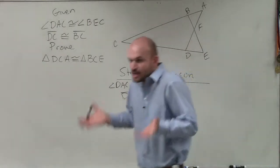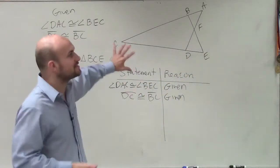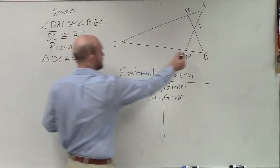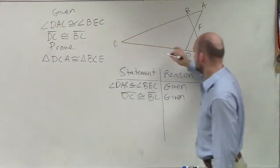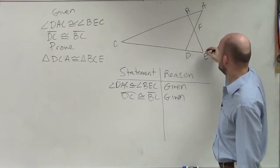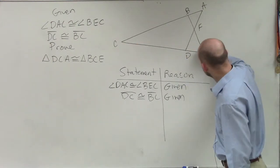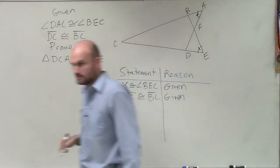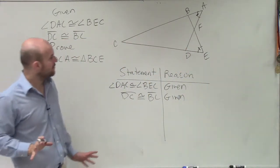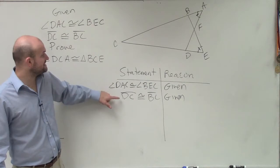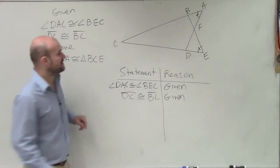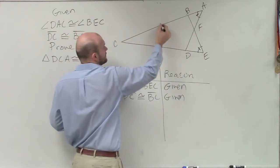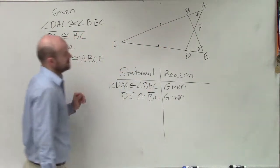Step number two, take our given information and apply it to our figure. So they say that angle DAC is congruent to BEC. So if they're congruent, that means they're equal in measure. Did everybody see that? Does everybody agree? Then it says DC is congruent to BC. So D to C is congruent to B to C. So those are equal to each other.